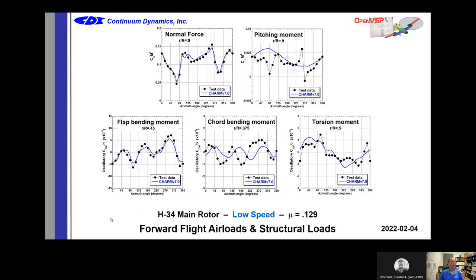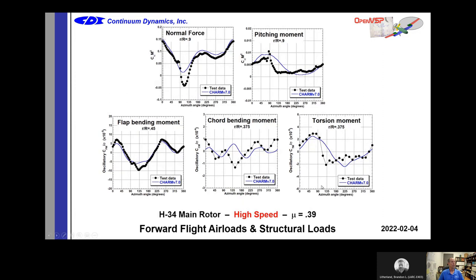Shown at low speed and high speed edgewise flight for the H-34, CHARM can calculate both aerodynamic and structural loads on your blade. One thing a lot of eVTOL people are underestimating is how much they'll fly in edgewise flight and what the loads will be on these rigid props. Helicopter people discovered long ago that a hinged rotor is great for offloading in edgewise flight. With rigid props, when you try to transition, you will be in edgewise flight for quite a while, and you'll want a tool that tells you what the loading is.